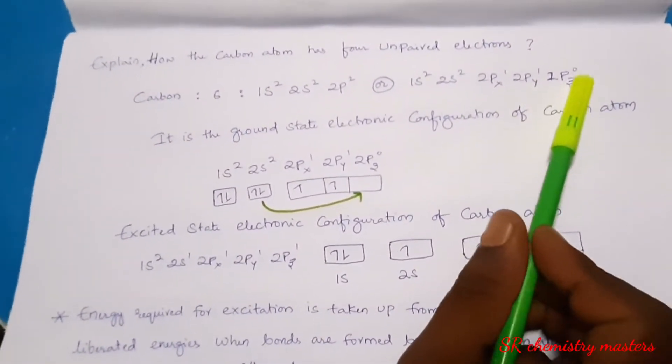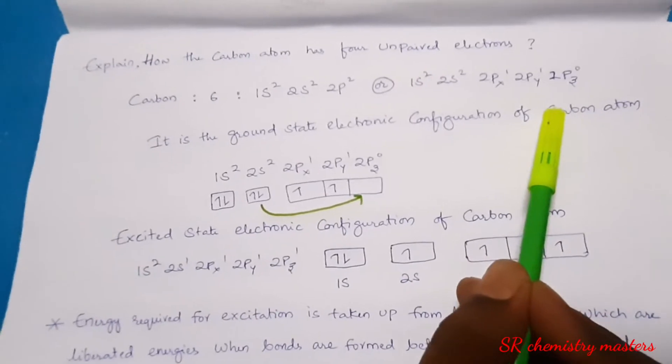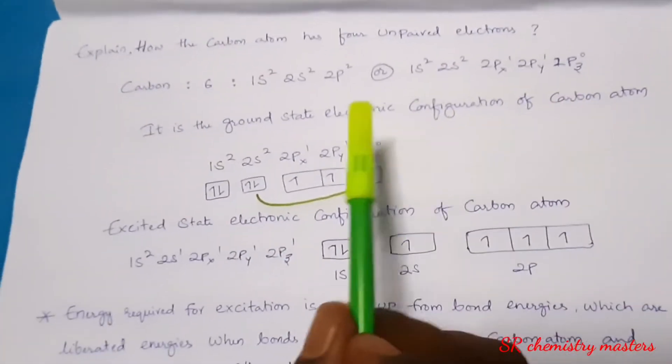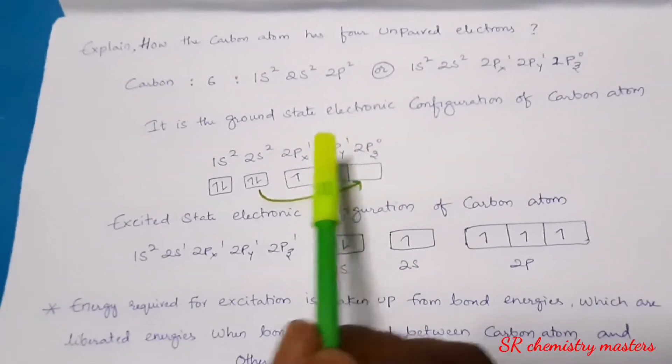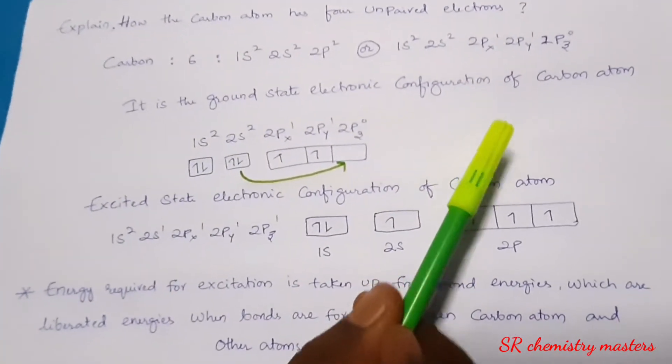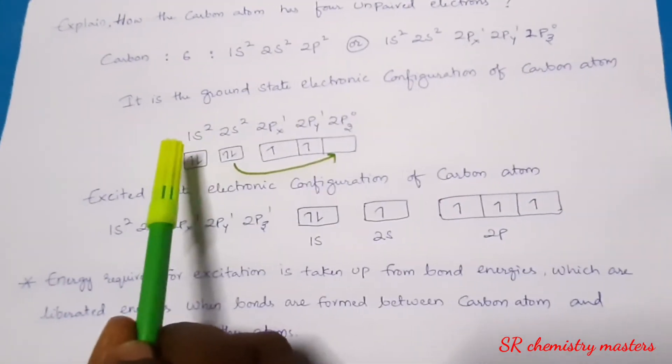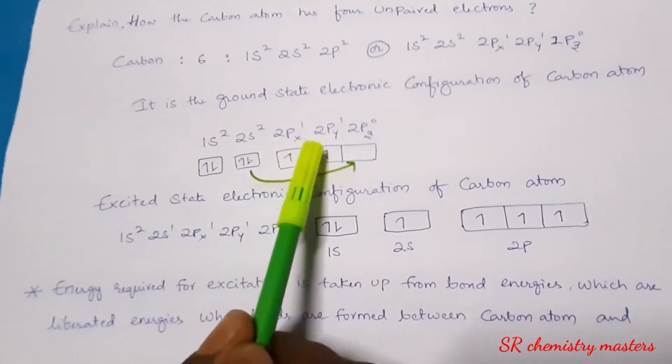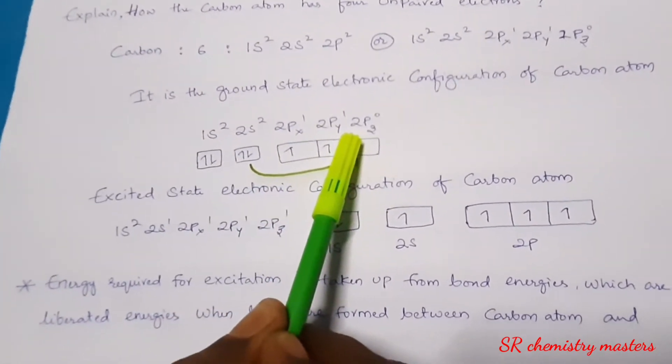The last pz orbital will not have any electron. Now let us see ground state electronic configuration and its representation. In ground state electronic configuration of carbon atom, the electronic configuration is 1s2, 2s2, 2px1, 2py1, 2pz0.